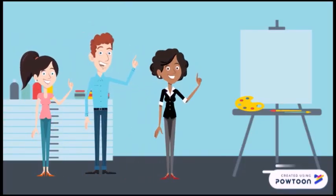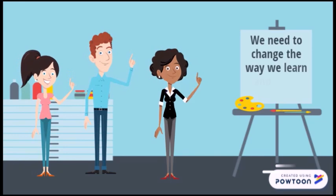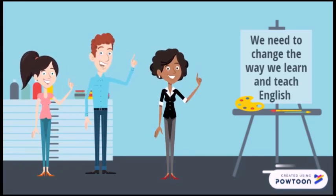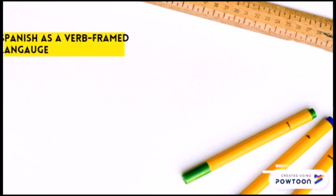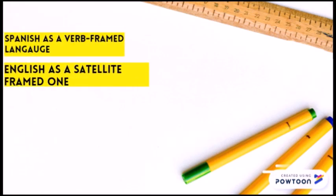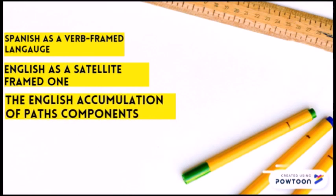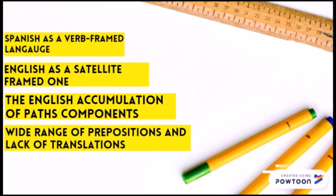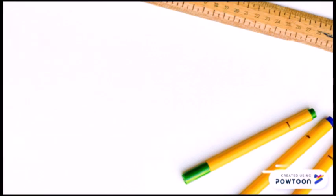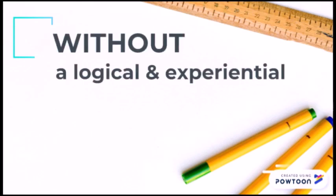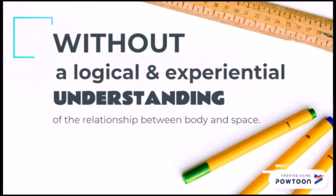Our final reflection is that we need to change the way we learn and teach English prepositions, considering all the difficulties we have as second language learners and teachers. The fact that Spanish is a verb-framed language and English a satellite-framed one. The English accumulation of path components and the wide range of English prepositions and the lack of clear translations to all of them. And the fact that we are used to teaching and learning prepositions by heart without a logical and experiential understanding of the relationship between body and space.